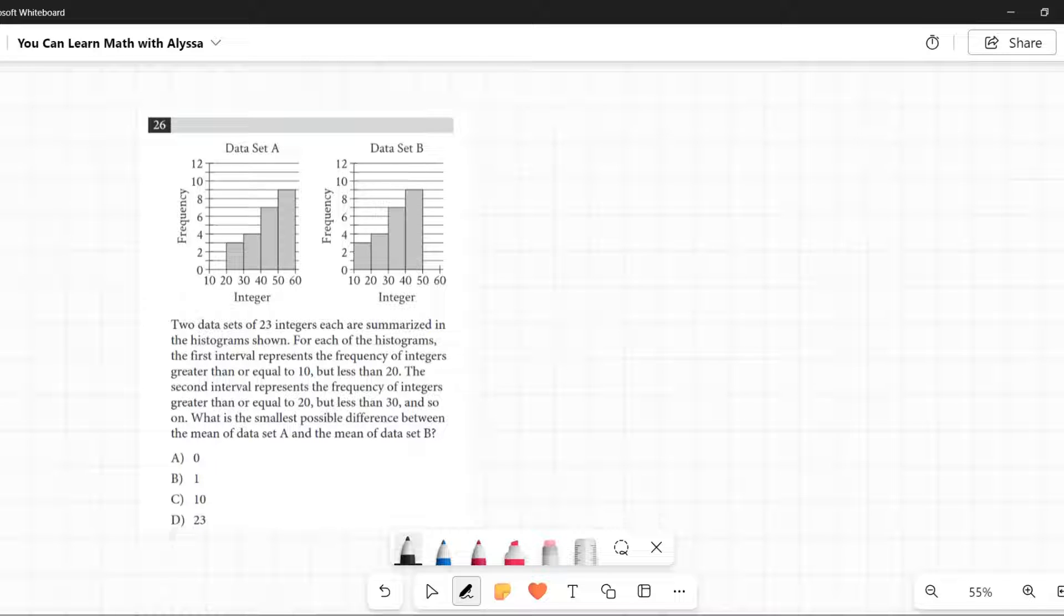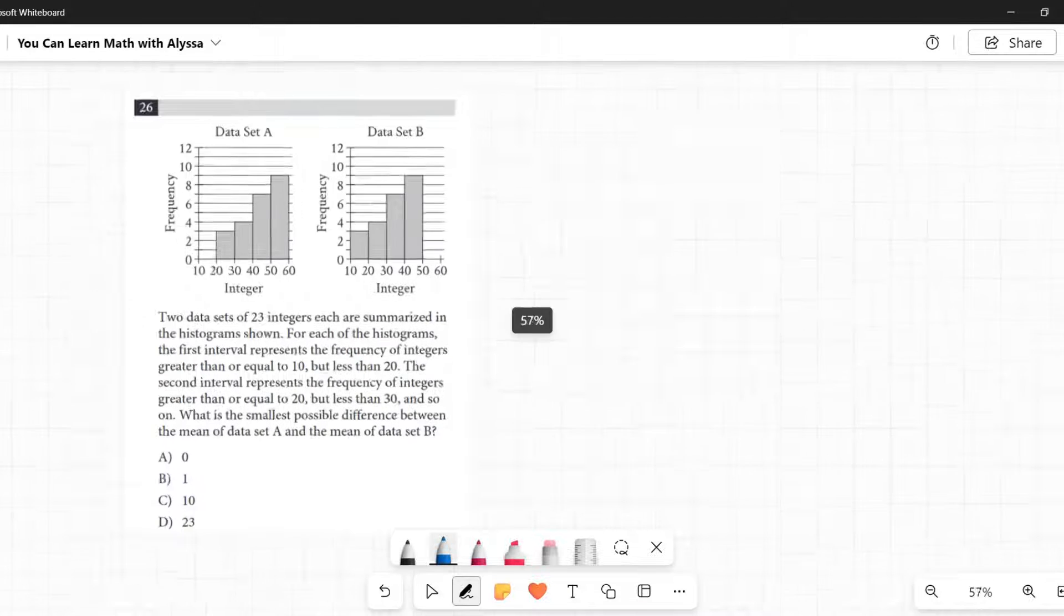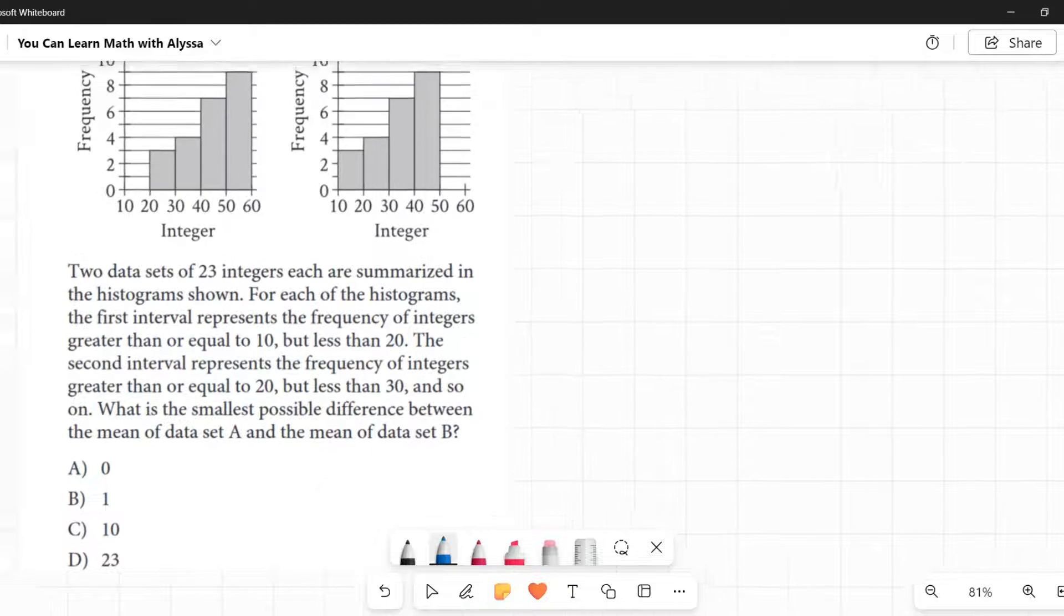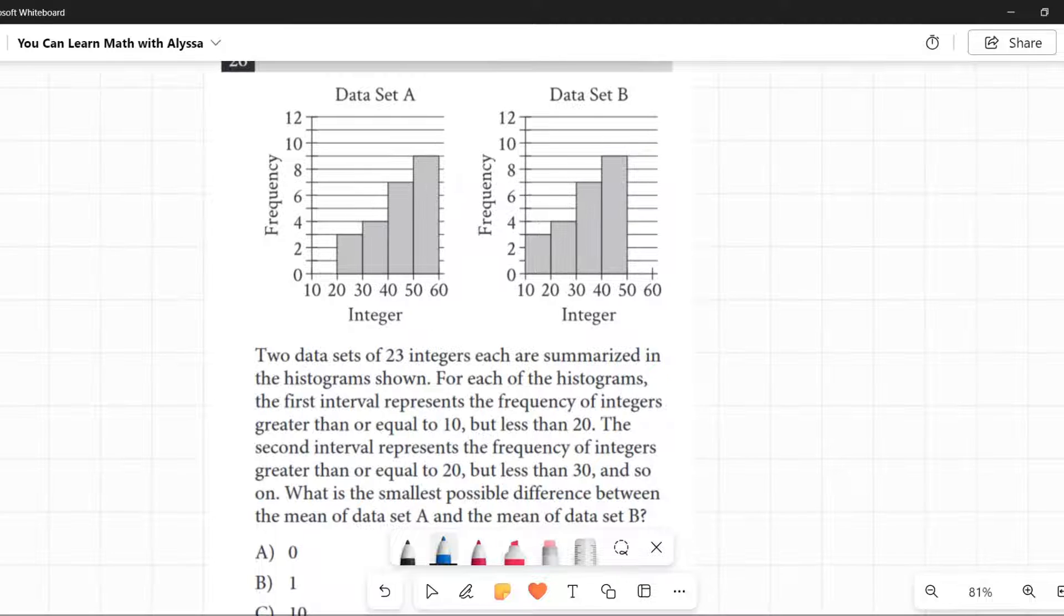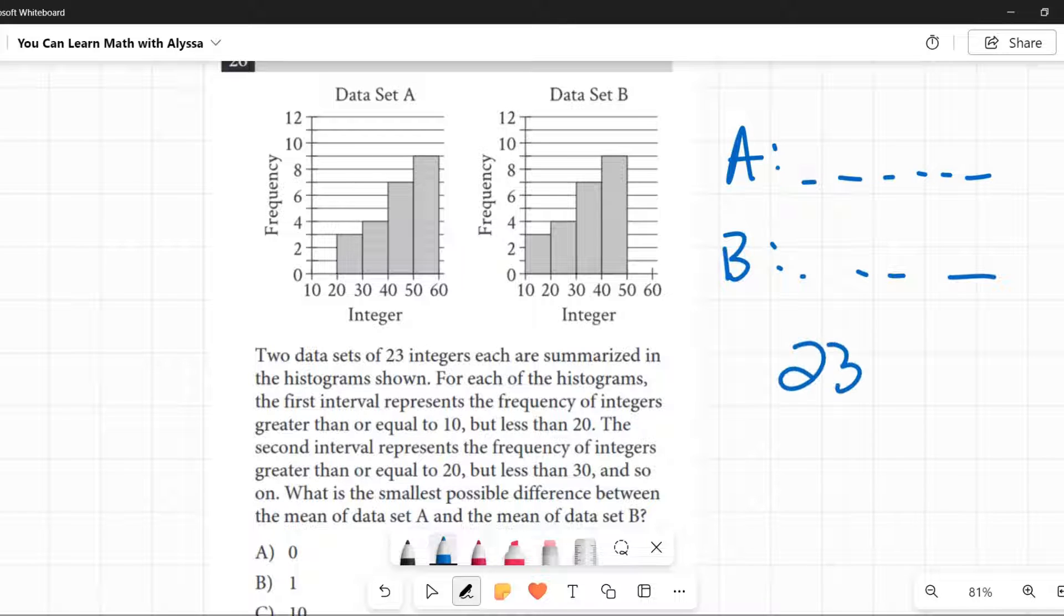A lot going on here. All right, so let's start by just making sure we understand what these histograms mean. Okay, so there's two data sets of 23 integers. We have data set A and B. In each of these data sets, there are 23 numbers. They each have 23 numbers in them.